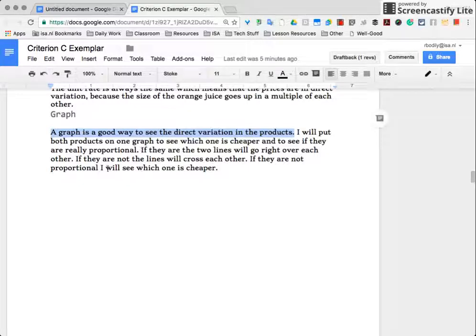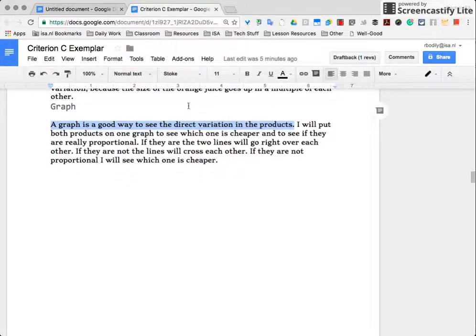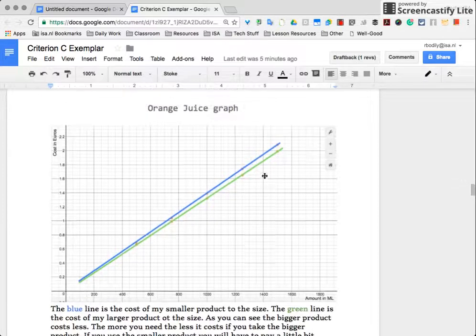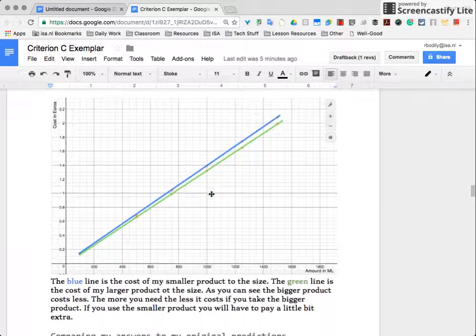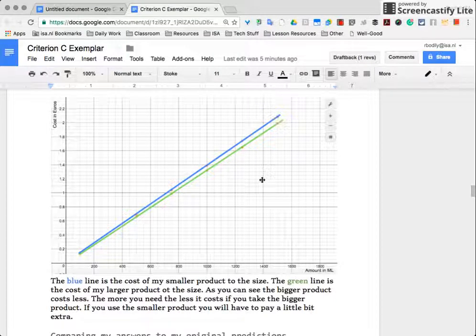If they're not proportional, I will see which one is cheaper. So he did now explain what he's going to do with this graph. And now the graph is labeled again, it's clear, it's easy to read, and we can see the graph.